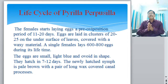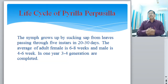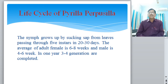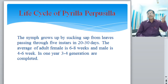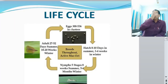A single female lays 600 to 800 eggs during its lifetime. The eggs are small, light blue and white in shape, hatching in 7 to 12 days. The newly hatched nymph is pale brown with a pair of long waxy-covered anal processes. The nymph grows by sucking sap from leaves, passing through five instars completed in 20 to 30 days. The adult female lives 6 to 8 weeks and the male 4 to 6 weeks.